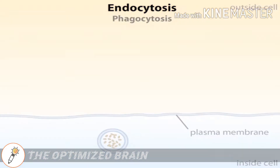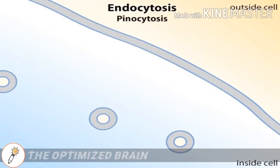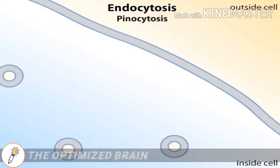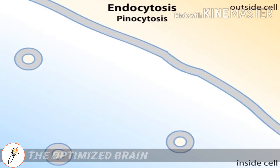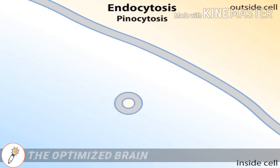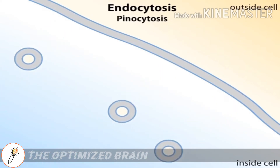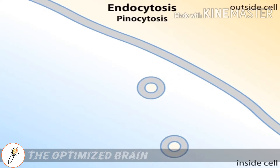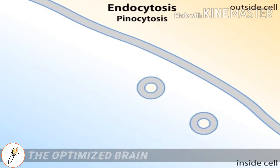In another type of endocytosis called pinocytosis, small vesicles pinch off from the plasma membrane, bringing small dissolved substances or fluids into the cell. Pinocytosis means cellular drinking.